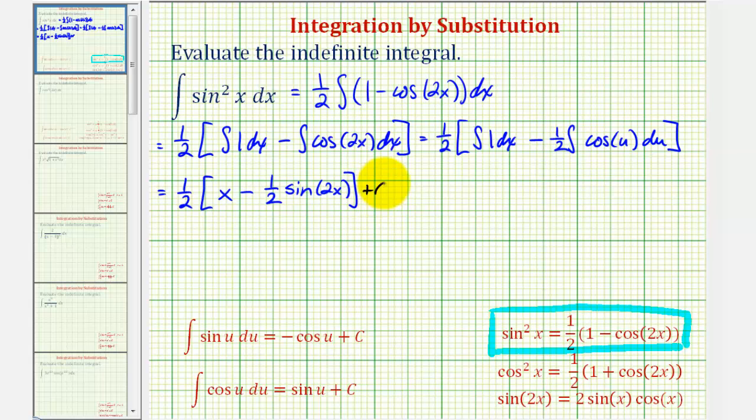And then of course plus c, our constant of integration. Let's go ahead and distribute here. We have one half x minus one fourth sine two x plus c.